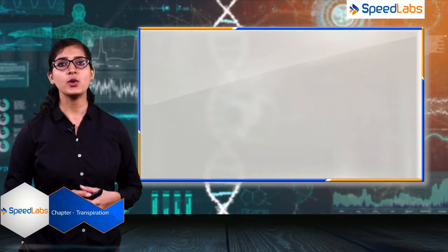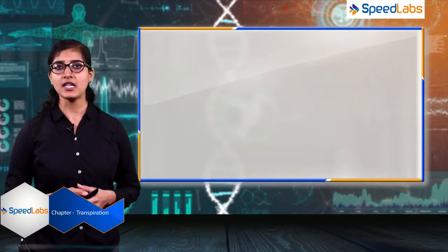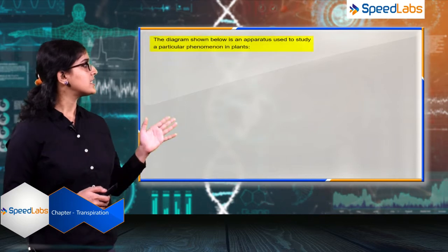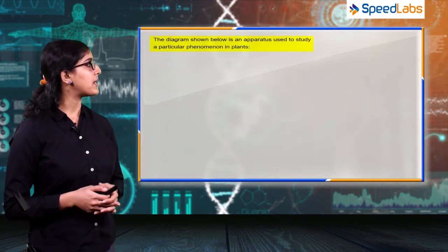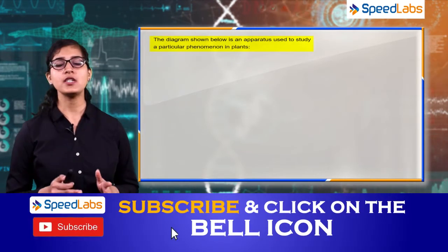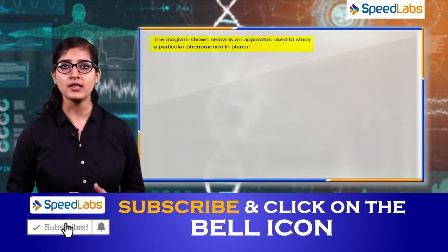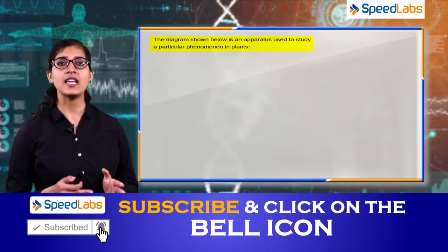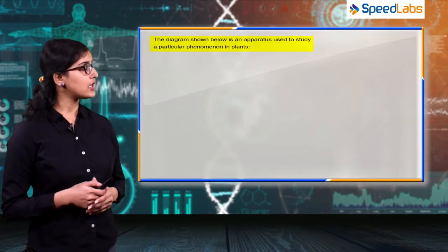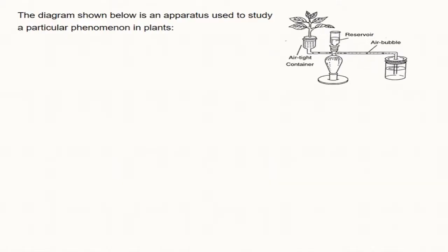The next important question from the chapter on transpiration: the diagram shown below is an apparatus used to study a particular phenomenon in plants. This is a diagram-based question. Observe this diagram properly. The labelings are: the reservoir, the air bubble, and airtight container.